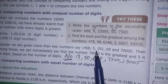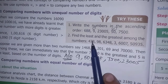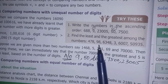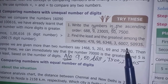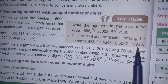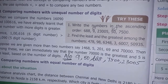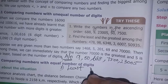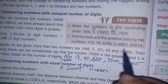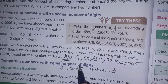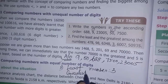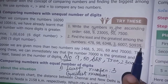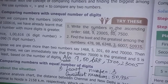Next is the second sum: find the least and the greatest among the following numbers. Let's get the least number and greatest number. The numbers are 478, 98, 6348, 3, 6700, and 50935. The least number is 3. The greatest number is 50,935.